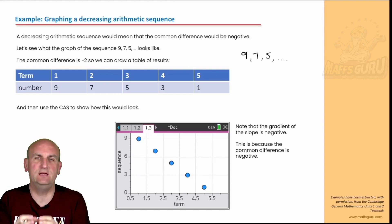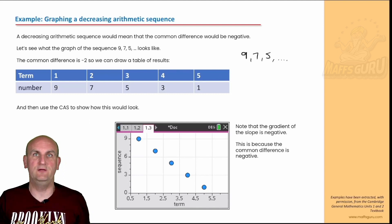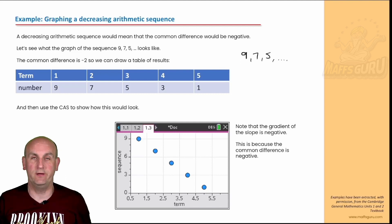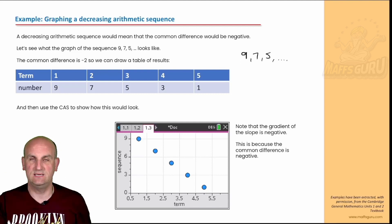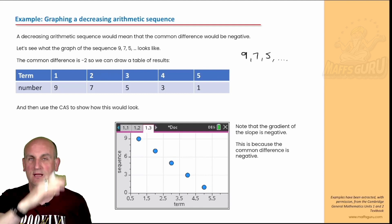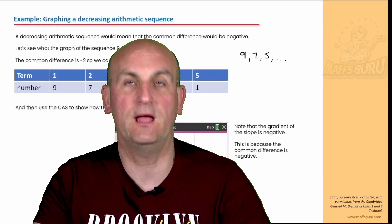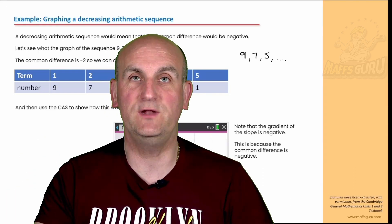This will become really, really important a little bit later on, but this is the foundation for using your calculator and to help you with the sequences. In General 3 and 4, you'll be using this over and over again, particularly creating sequences. Just know what it looks like — an arithmetic sequence is linear, a straight line. Geometric sequence will come a little bit later on.